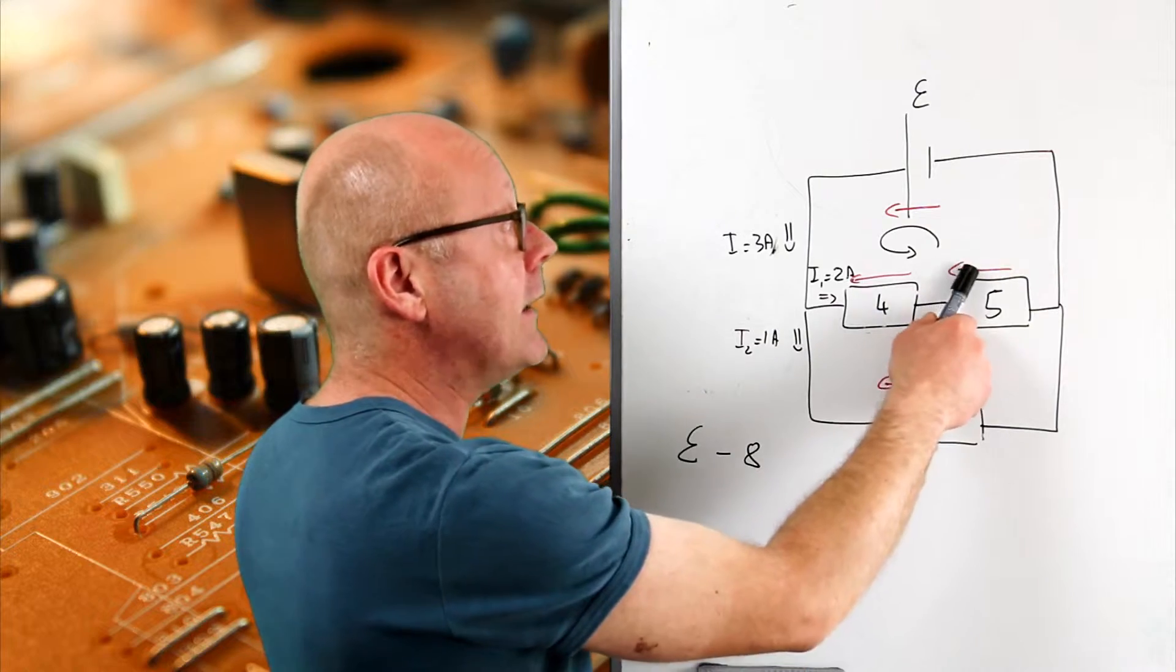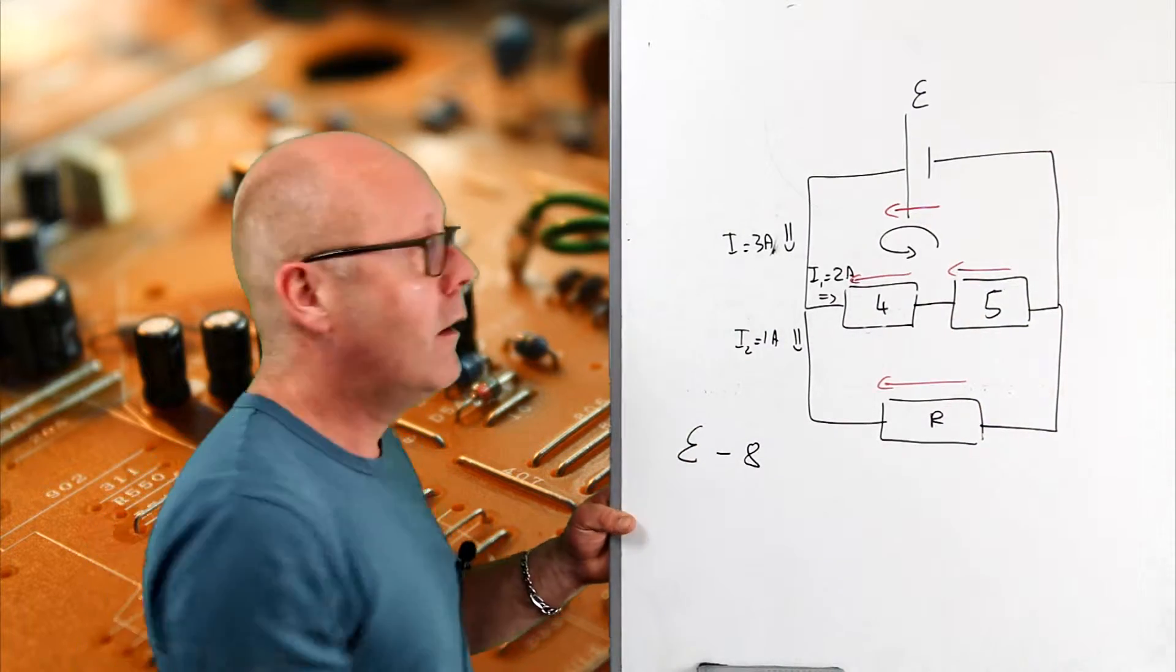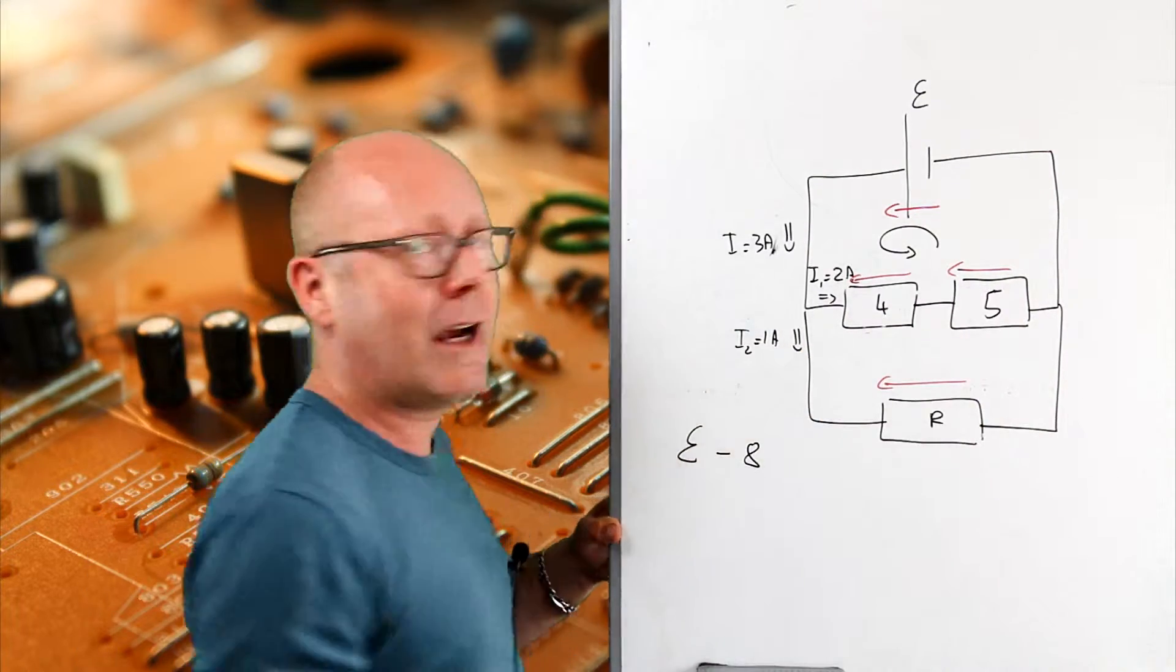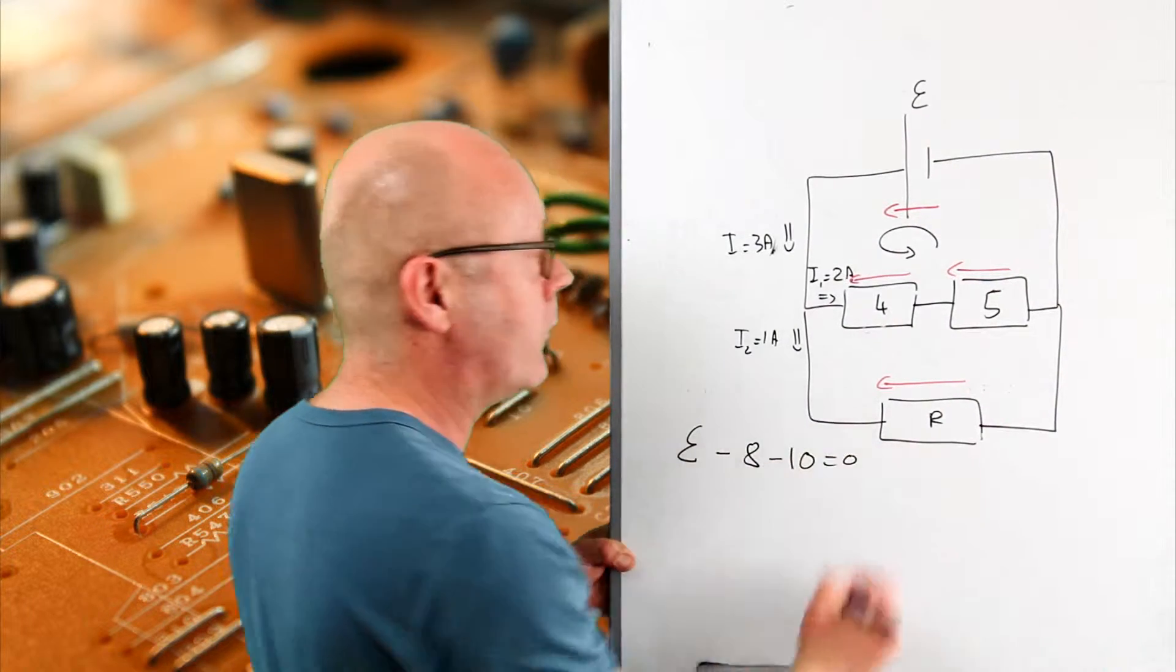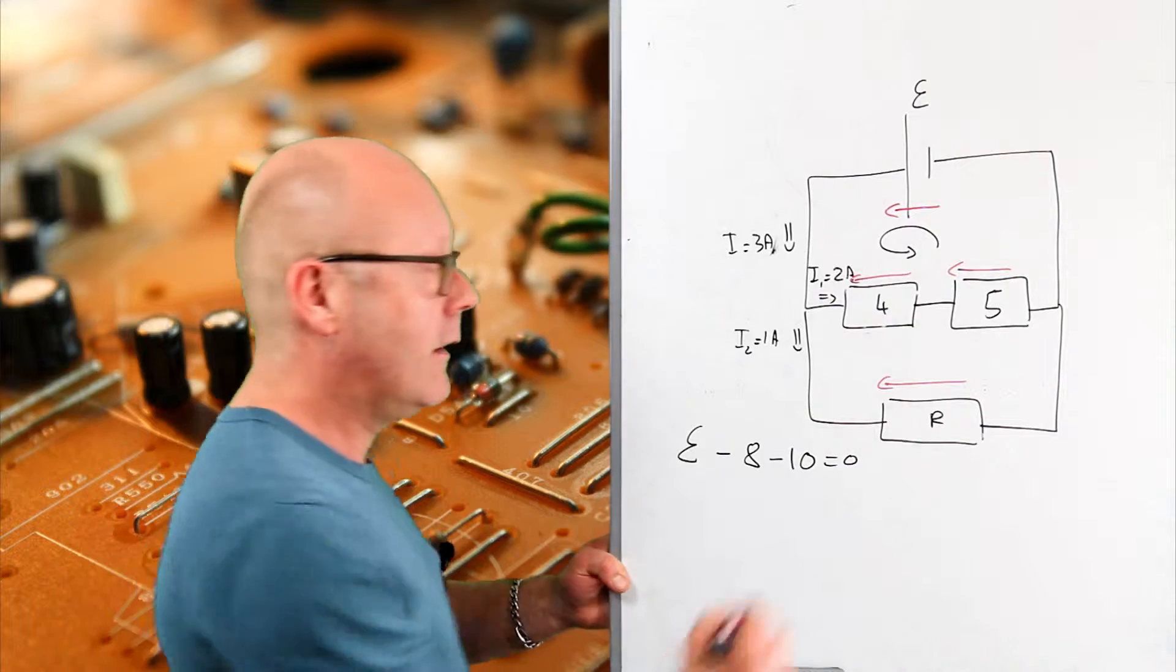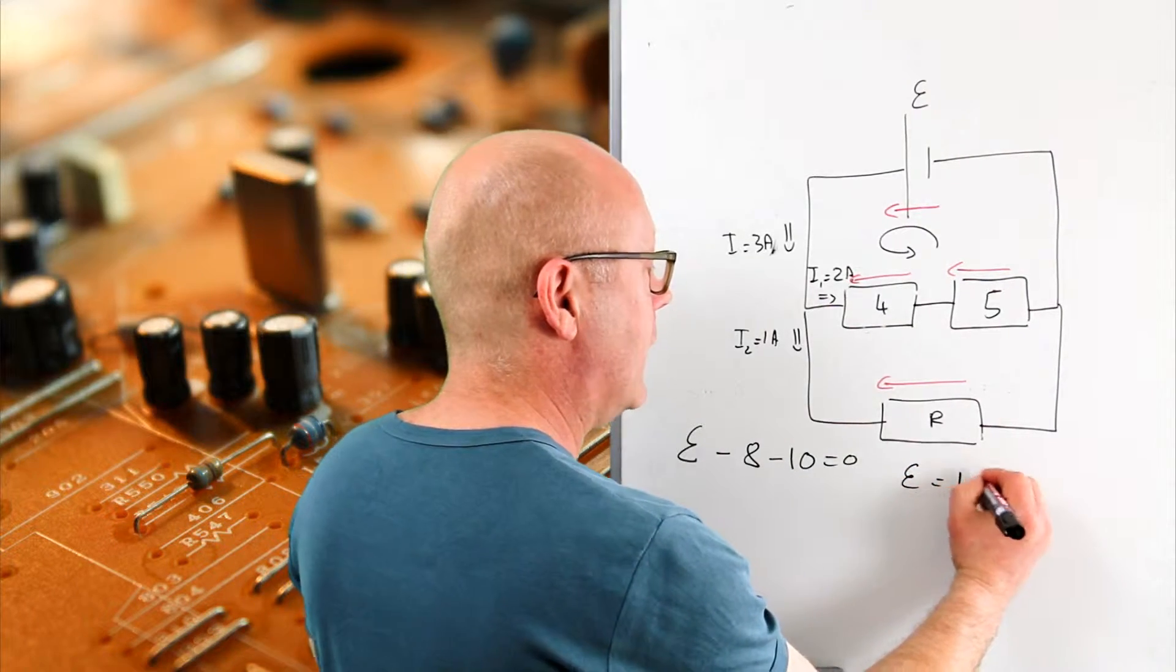I continue my trip and I find another potential drop. The current is 2A, the resistor is 5 ohms, so minus 10 equals 0. And that will give me the EMF, 18V.